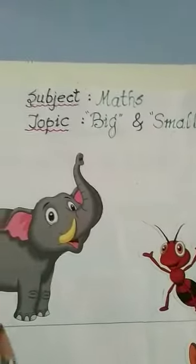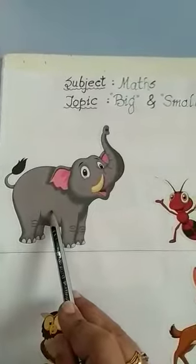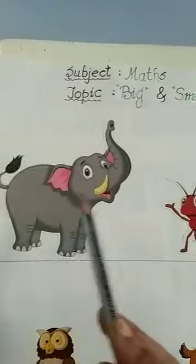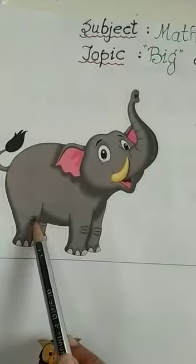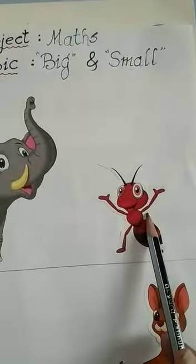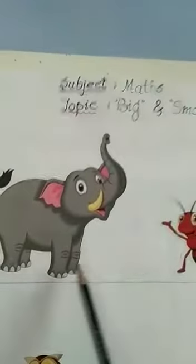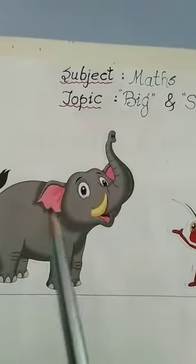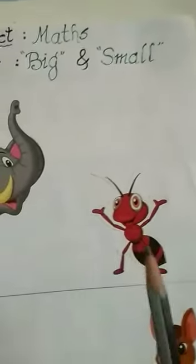I'll show you some pictures here. What is this? Tell me — big elephant. Very good. And what is this? An ant. So, this is elephant and this is an ant. See the picture of the elephant — the size of the elephant is big. And the size of the ant is small.